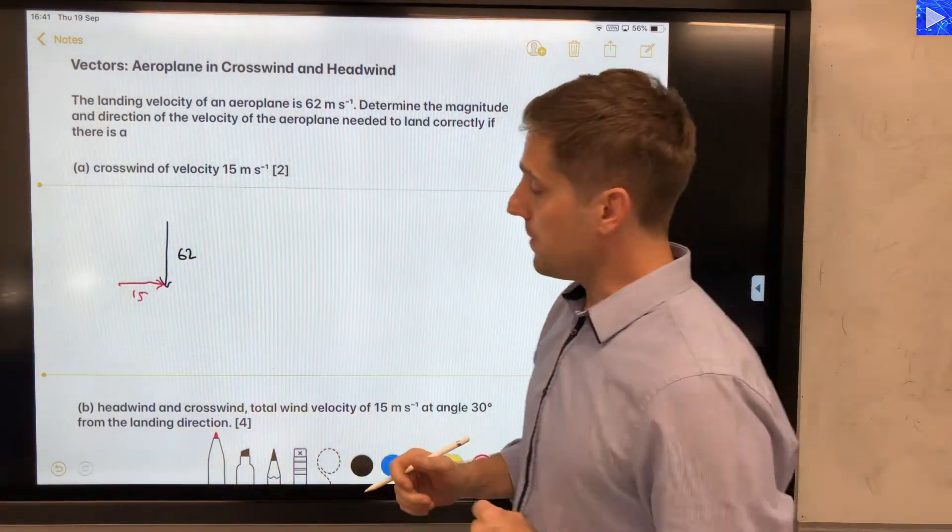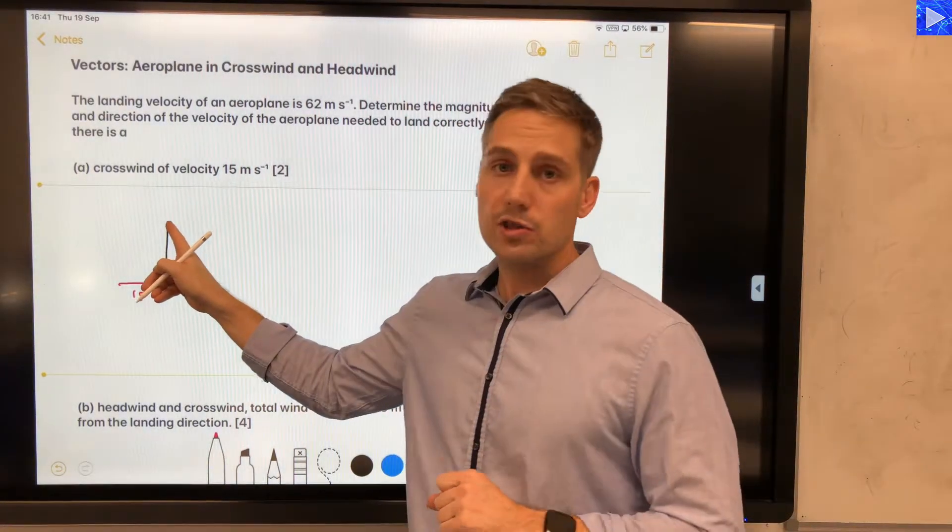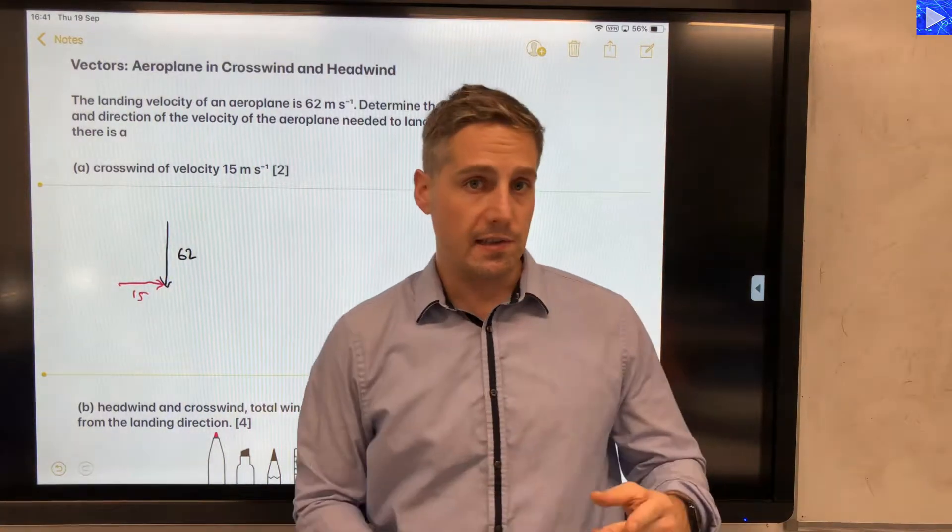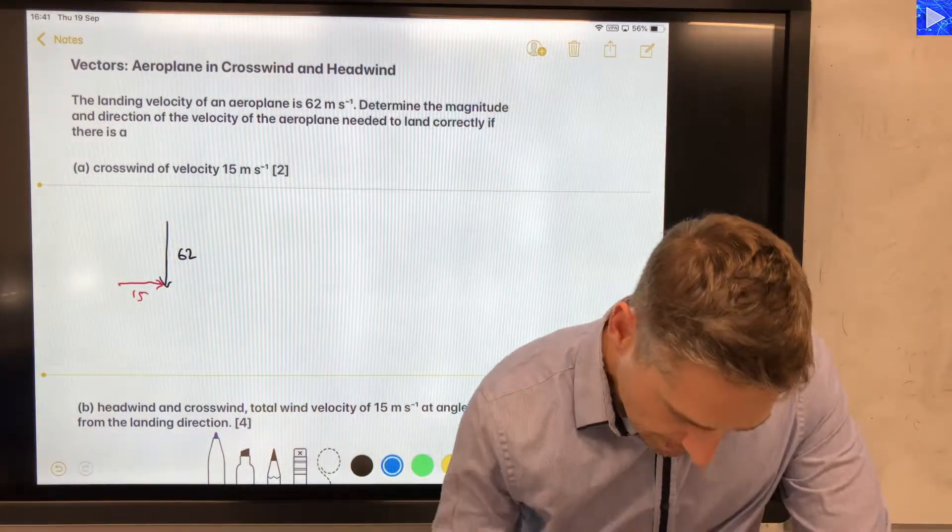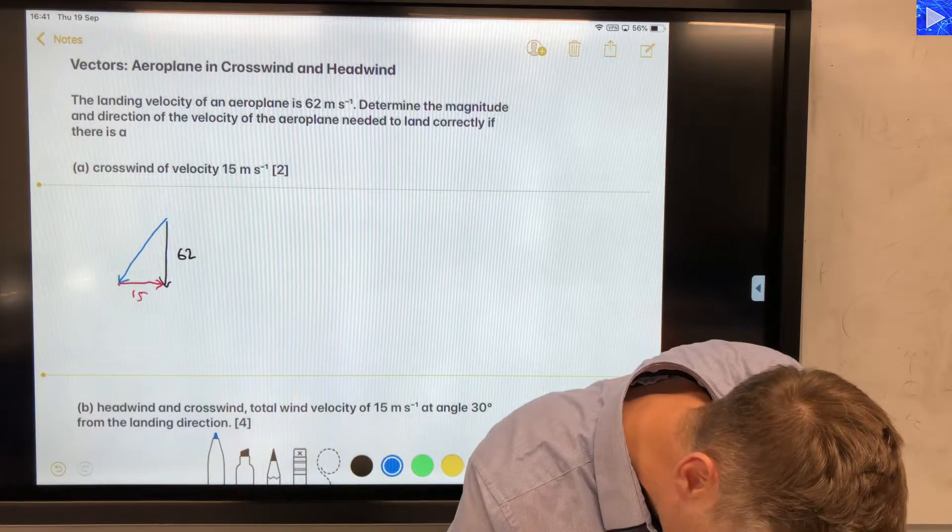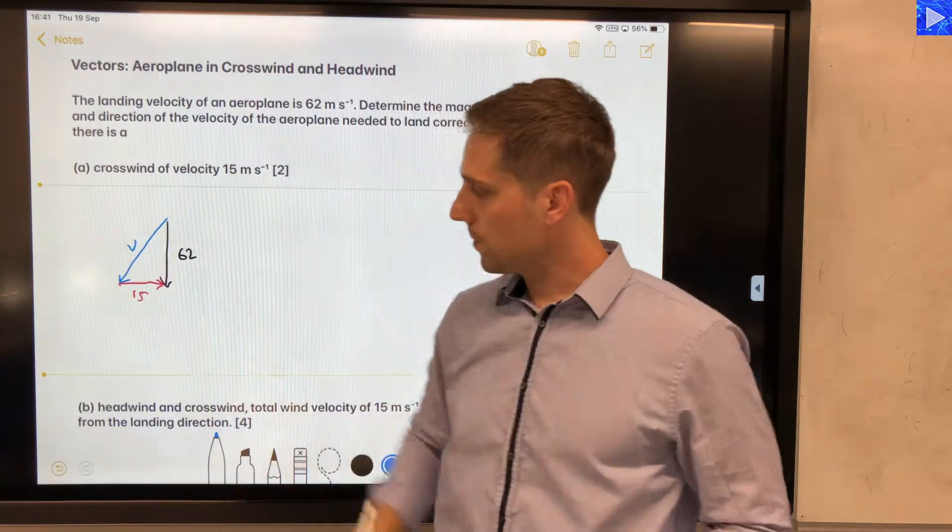So therefore the velocity vector that the airplane needs is going to start at the origin of the 62 meter per second resultant velocity and end so it's head to tail with the 15 meter per second one. So let's draw this in blue. This is the V that I'm interested in. This here.